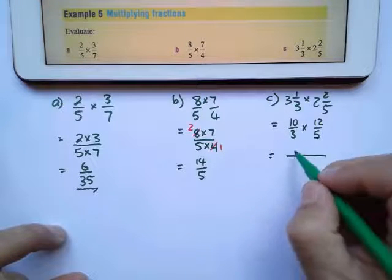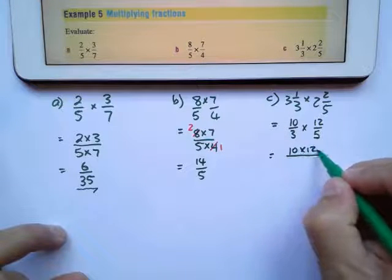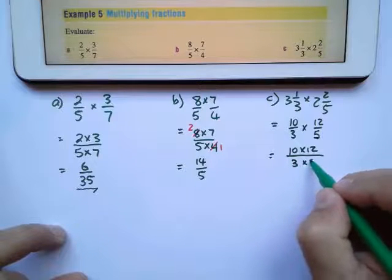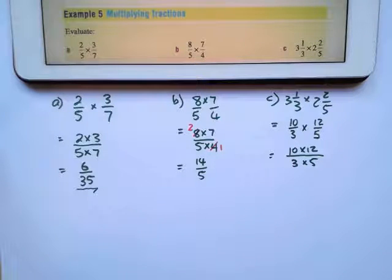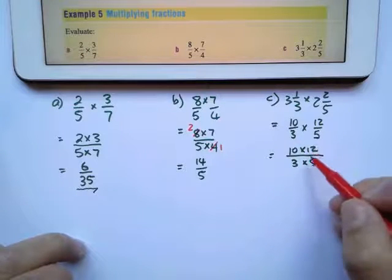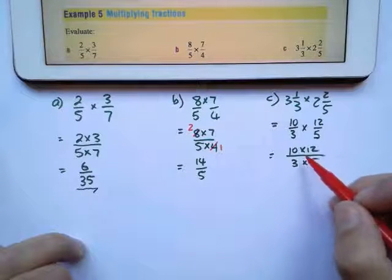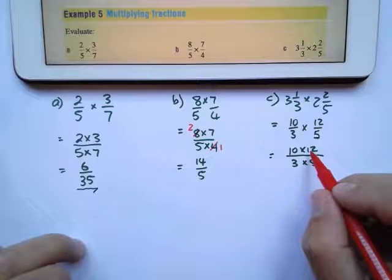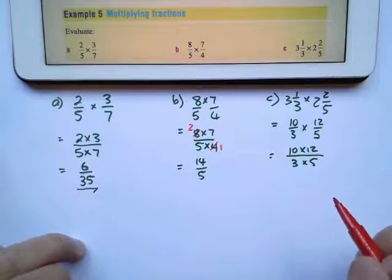I'll then write it as one fraction, so it's going to be 10 times 12, top with top, bottom with bottom. And I'm going to see if I can simplify. Remember, it doesn't have to be underneath each other. It can also be across, as long as it's multiplication above the line and underneath the line.